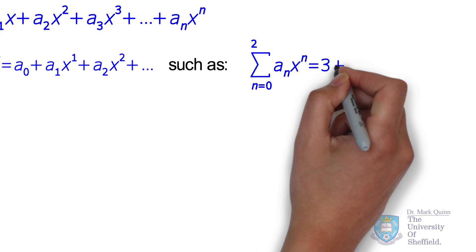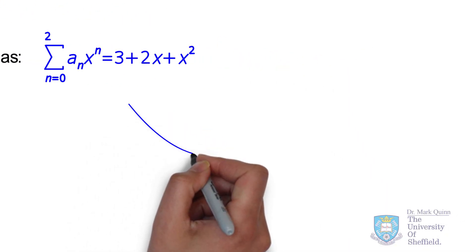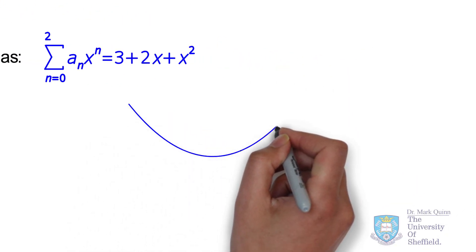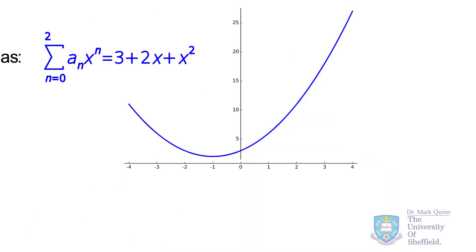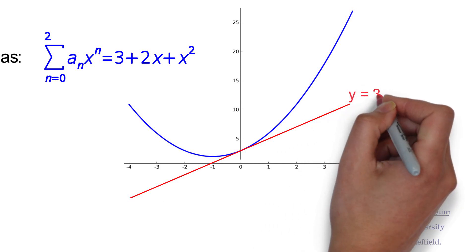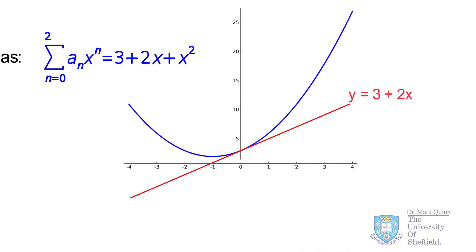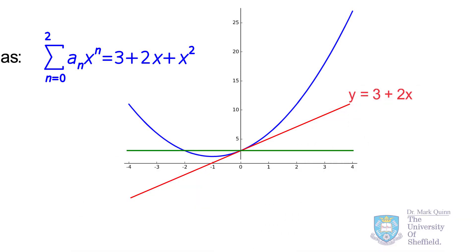To intuitively understand what the different terms contribute to the polynomial, we can simply remove them one by one and compare the curves. For a perfect approximation we would keep all of these terms. If we reduce the number of terms, we can save on calculation time but at the expense of accuracy.